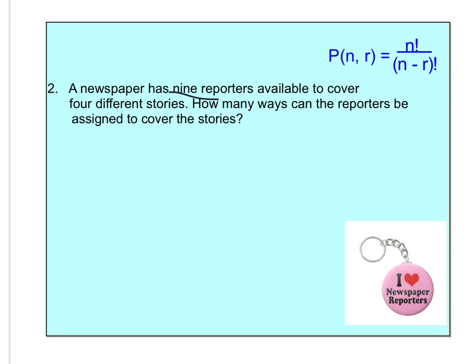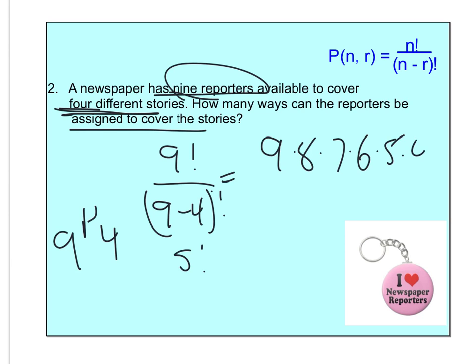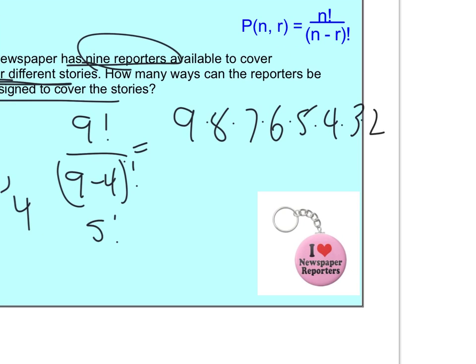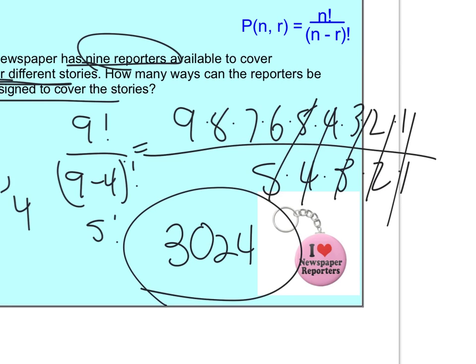So now a newspaper has nine reporters to cover four different stories. How many different ways can the reporters be assigned to cover the stories? So four different stories. This is going to be an arrangement. So I've got four stories. How can I have the nine reporters cover the four stories? So it's just going to be 9 choose 4. So that's going to be 9 factorial over 9 minus 4 factorial. So 9 minus 4 factorial, 5 factorial. So as you get good at this, you can start to recognize where it's going to start canceling out. So 9 factorial on the bottom 5 factorial. 9, 8, 7, 6. So 72 times 42. That's going to be 3,024.